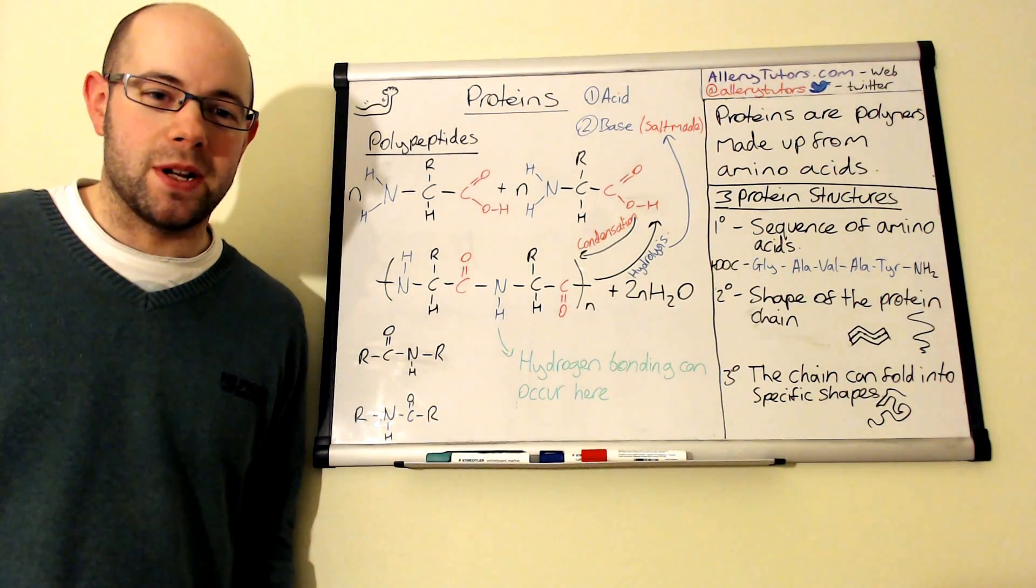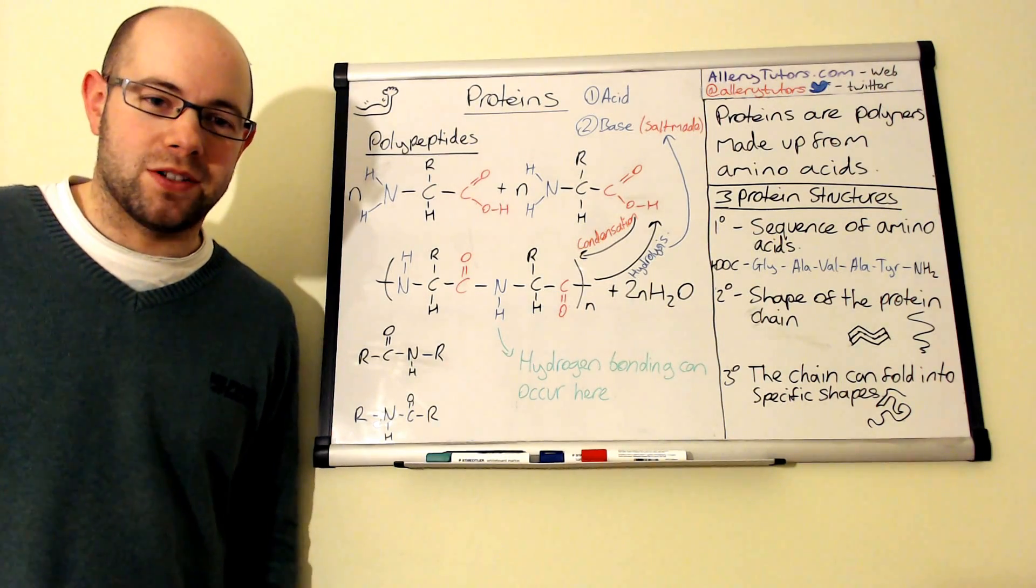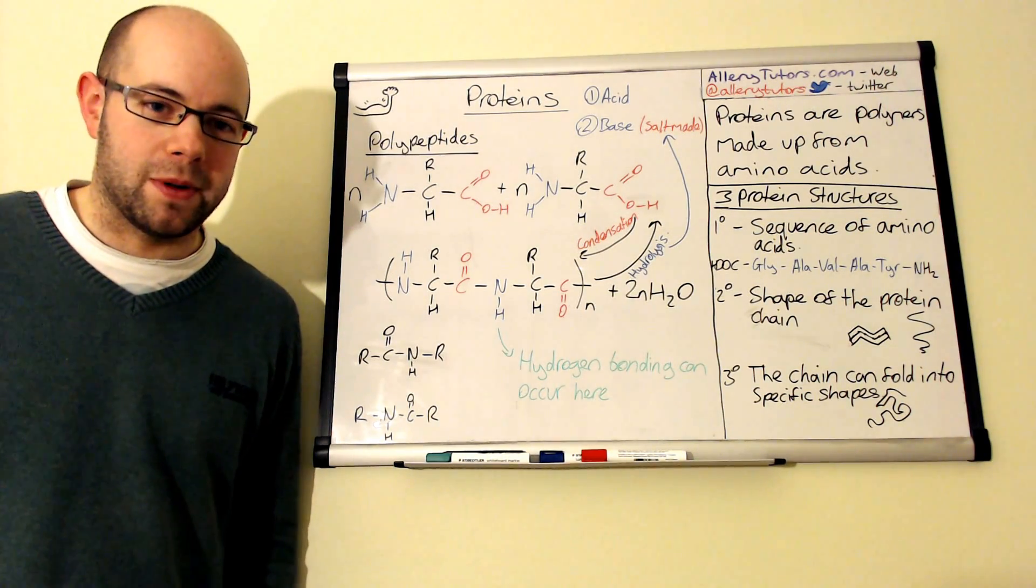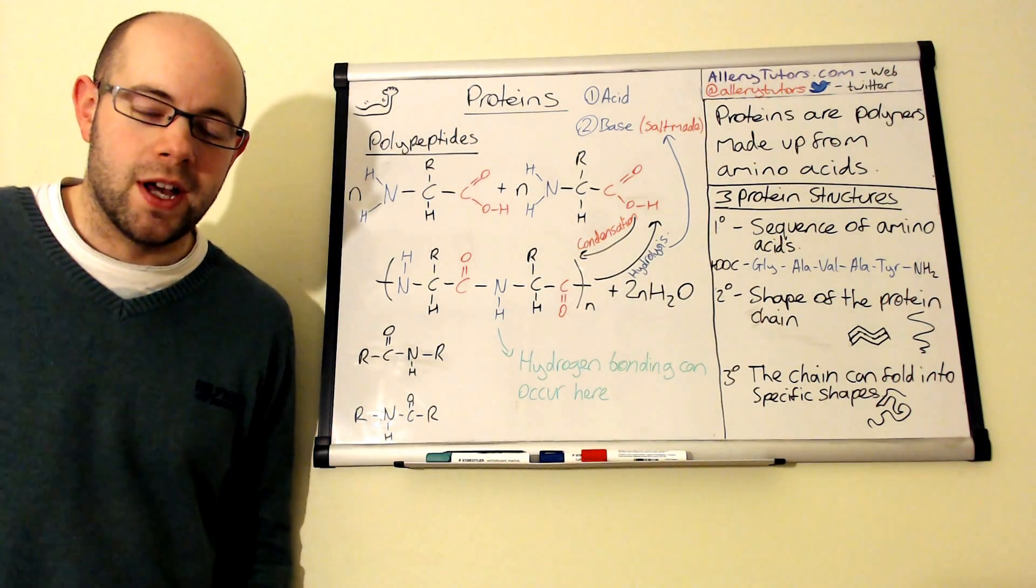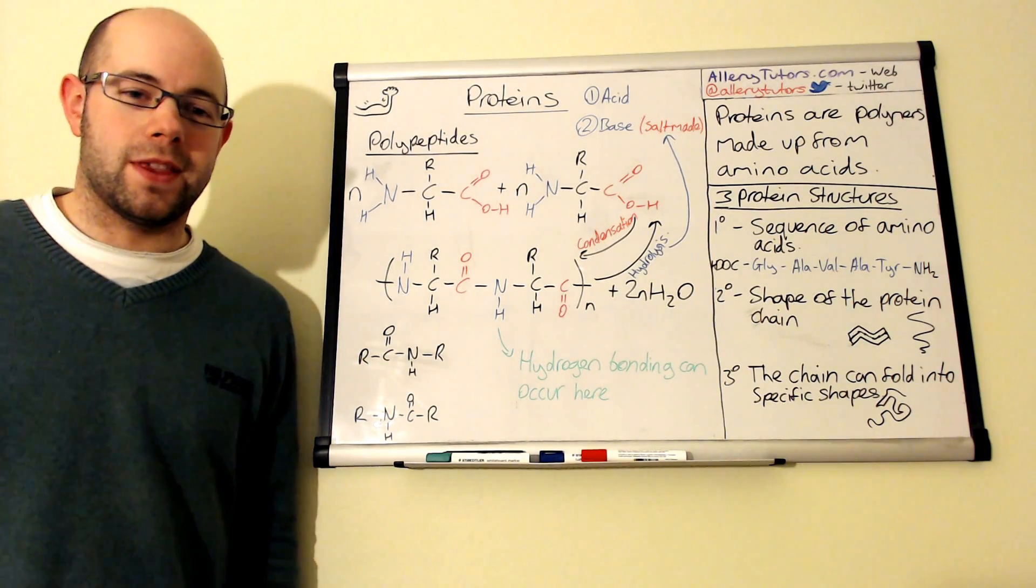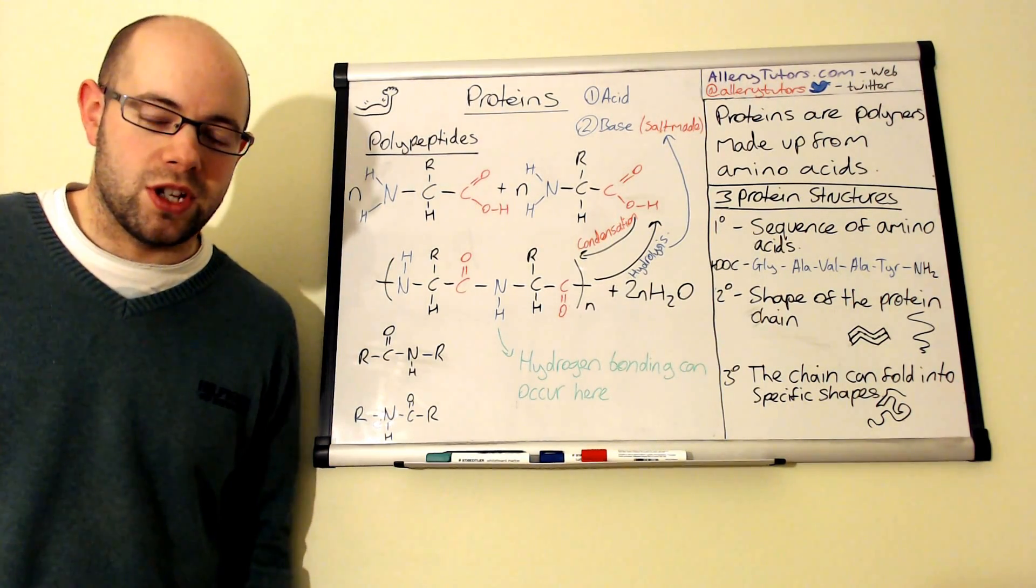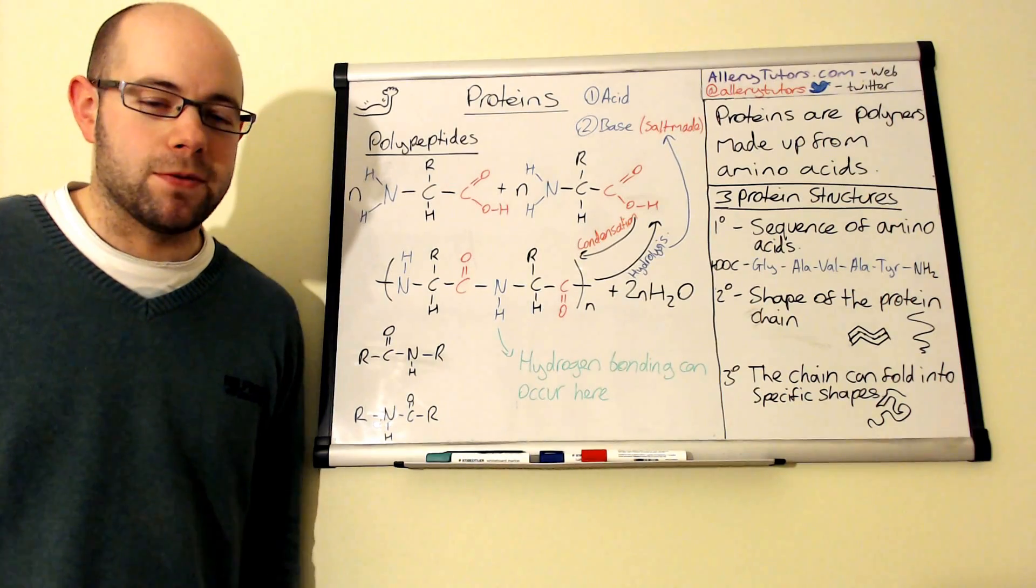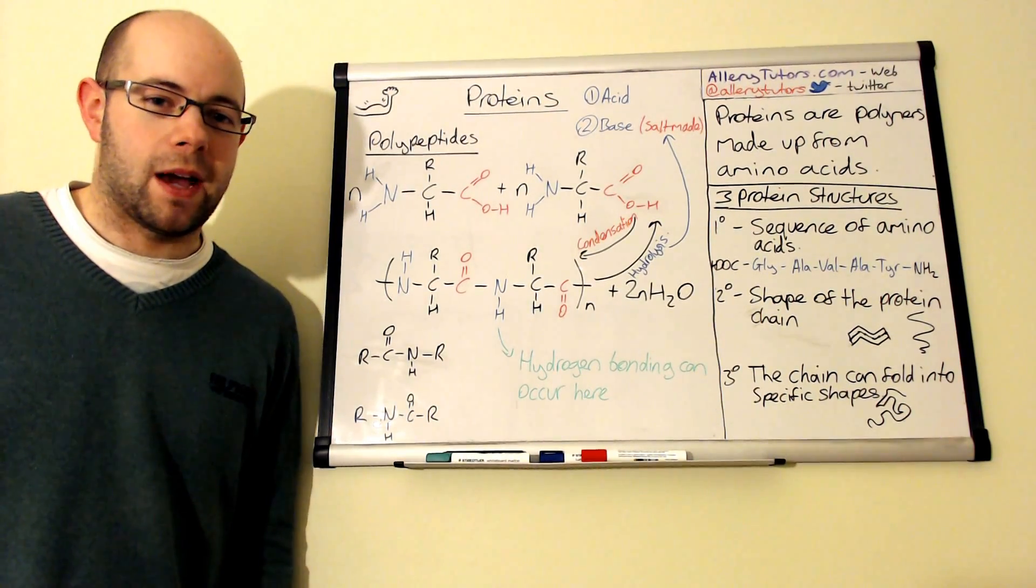Proteins are made from amino acids. They are lots of amino acids joined together to form a polymer chain, which is what we call a protein. In this video, we're going to look at the three types of protein structure that you need to know for chemistry. There are a lot more than three, but you'll need to know three for chemistry.